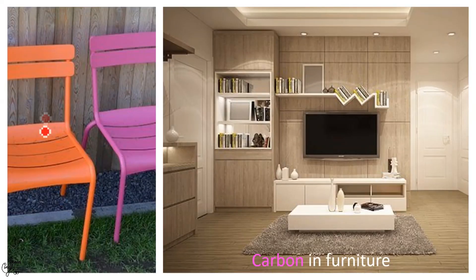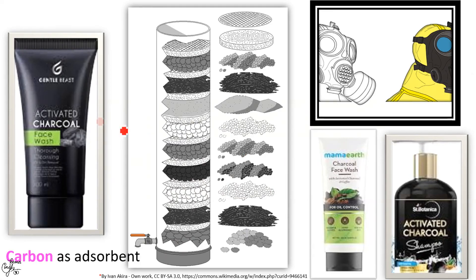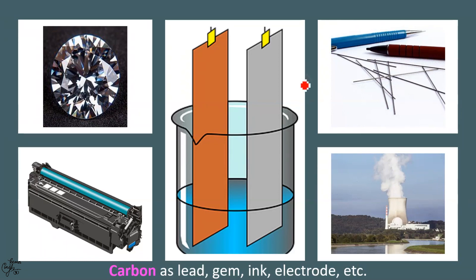The furniture we use — wood and plastics — are also carbon compounds. Carbon can form alloys such as stainless steel and carbon steel. Activated charcoal is used as an adsorbent in gas masks and water purification. You must have heard of recent advertisements of face washes and shampoos that claim to have activated charcoal to remove impurities such as dust present in skin and hair. Carbon in the form of graphite is combined with clay to form the lead used in pencils. As diamond, it is used in jewelry. It is used as a lubricant, a pigment in printing inks, and also finds use in nuclear reactors. We have already learnt the use of carbon as electrodes — remember graphite electrodes? Thus, we see that carbon and its compounds are extremely vital.